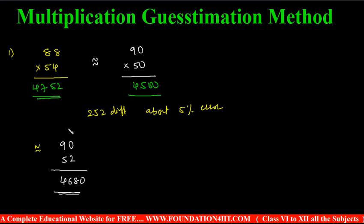You can notice 4752 is the original answer, 4680. It is only 1.5 percent error. If we can guess 4752 and 4680, the difference is only 72, whereas earlier it was 252. These two are the major differences.